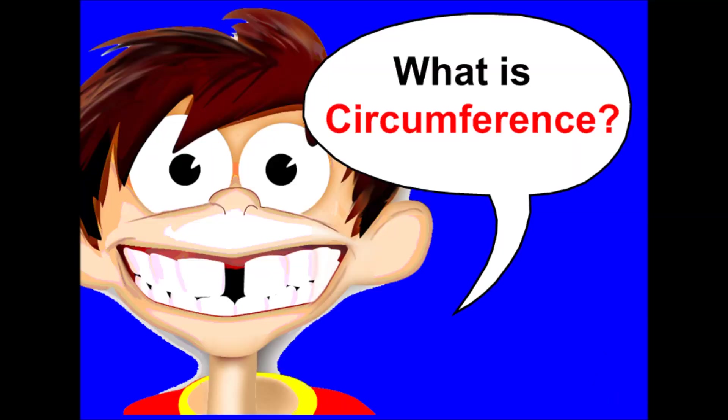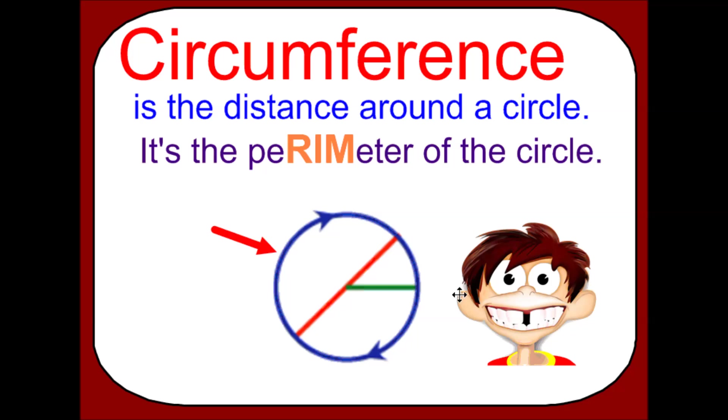Circumference of a circle. So what exactly is circumference? Circumference is the distance around a circle. It's like finding the perimeter of the circle.